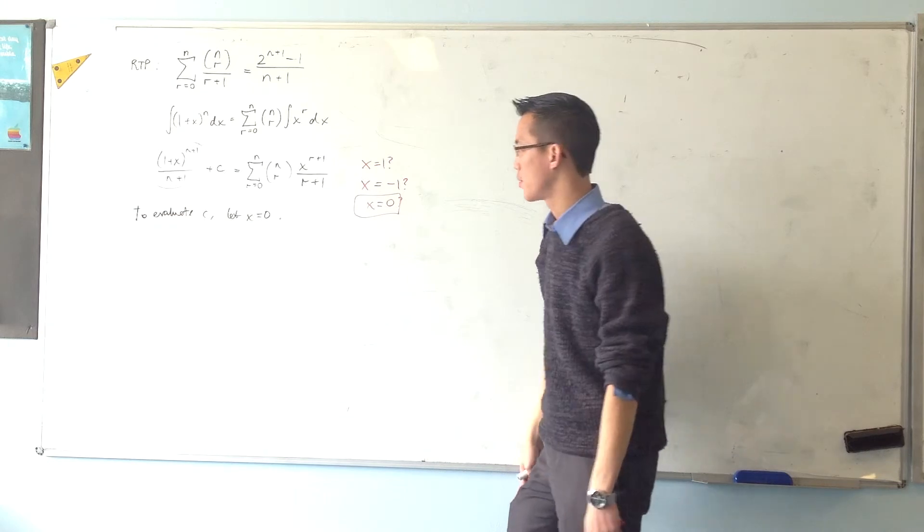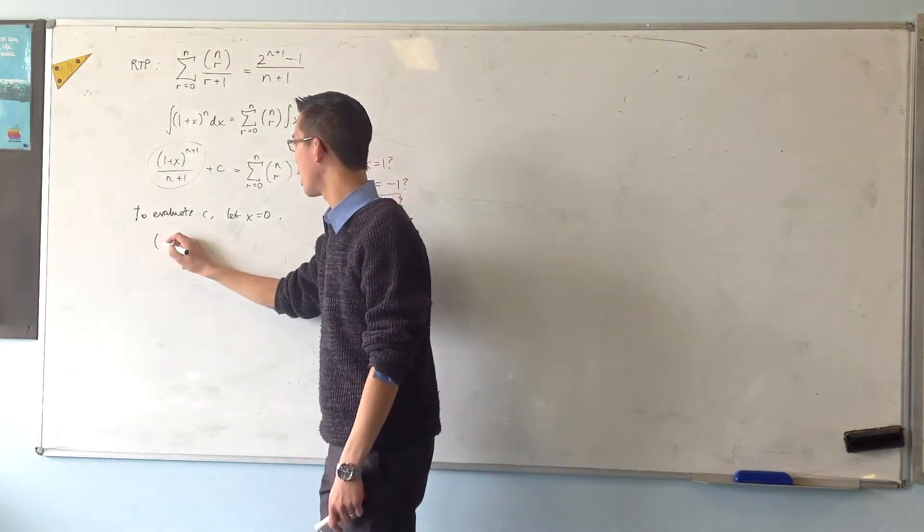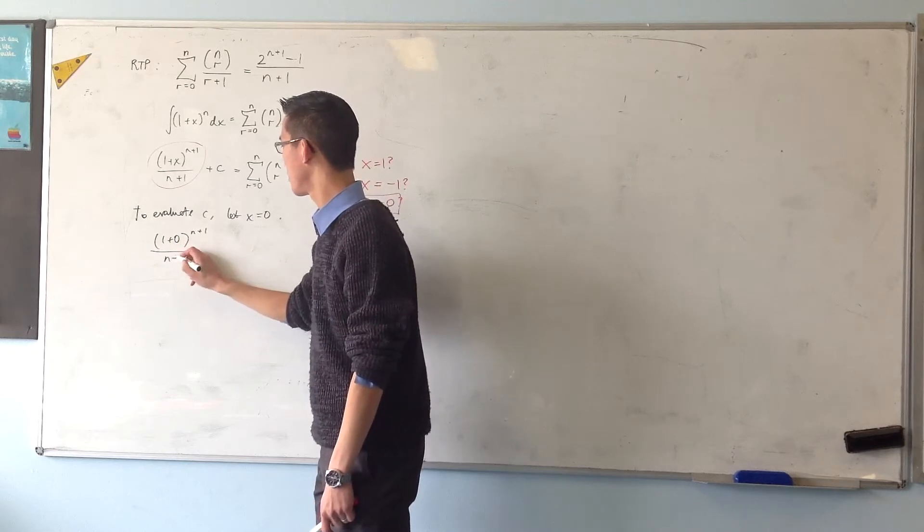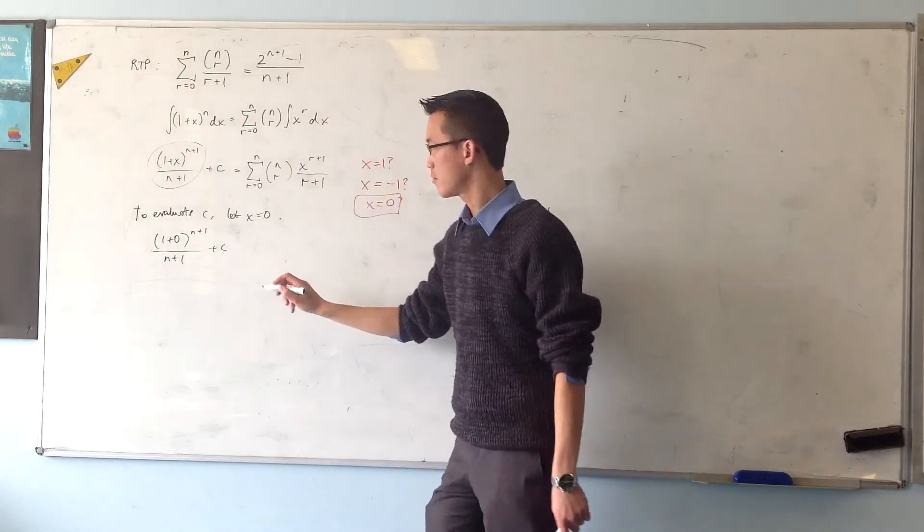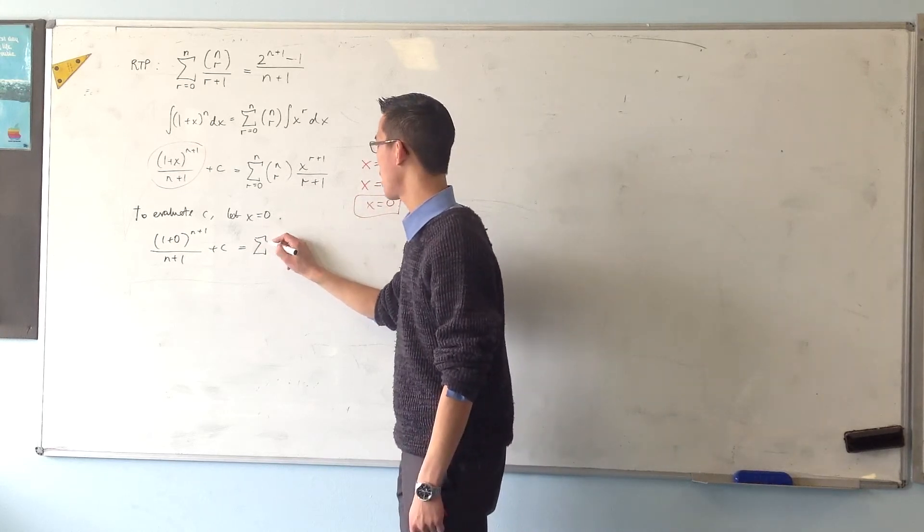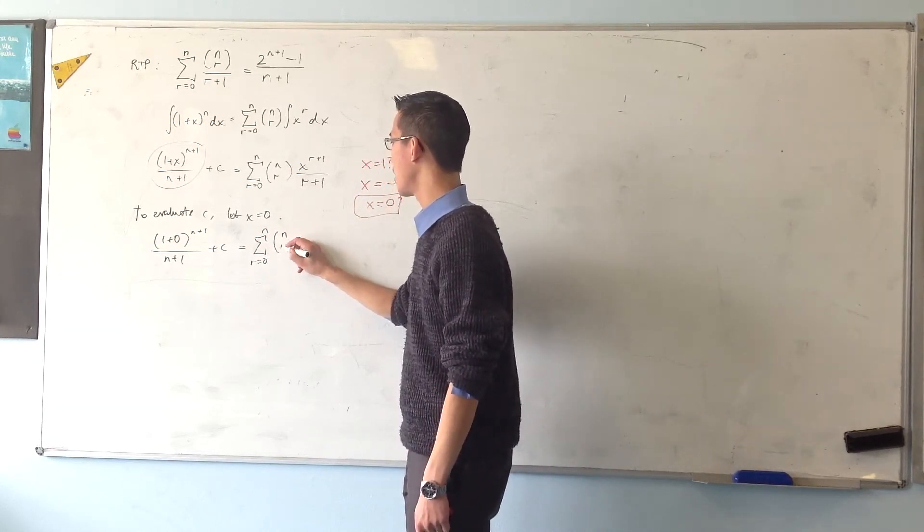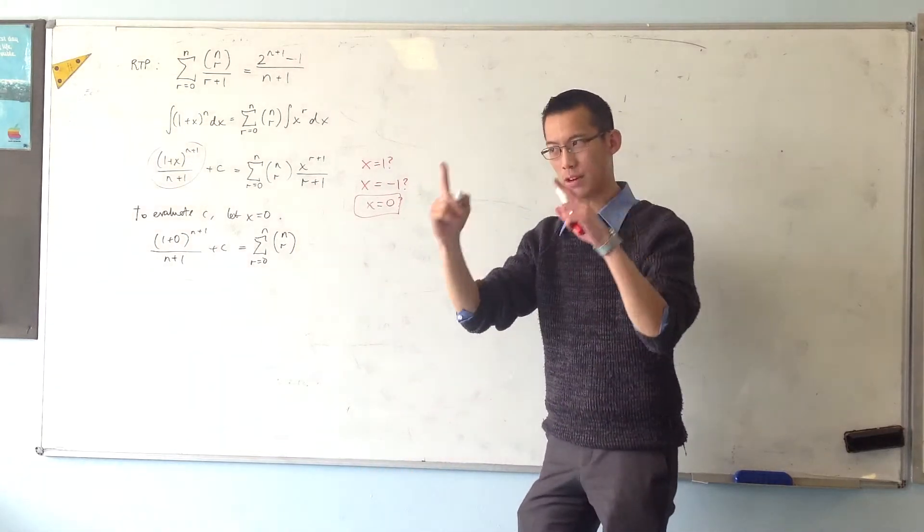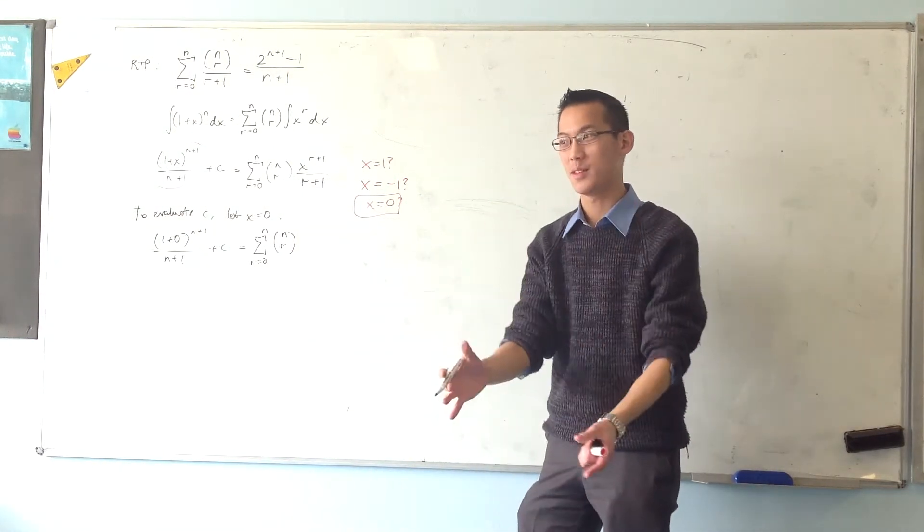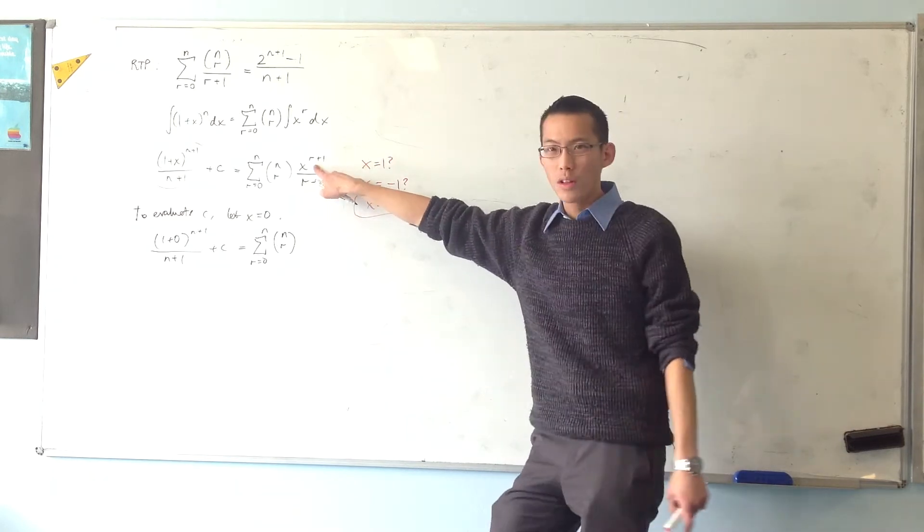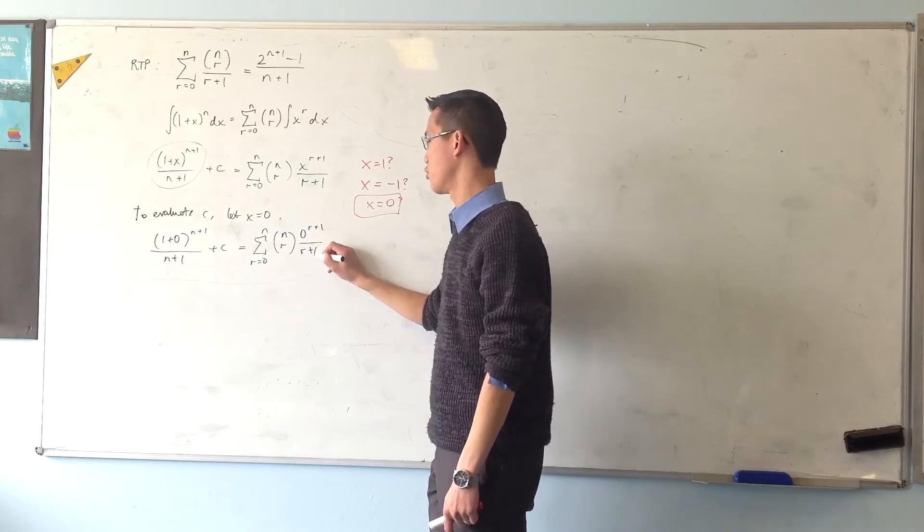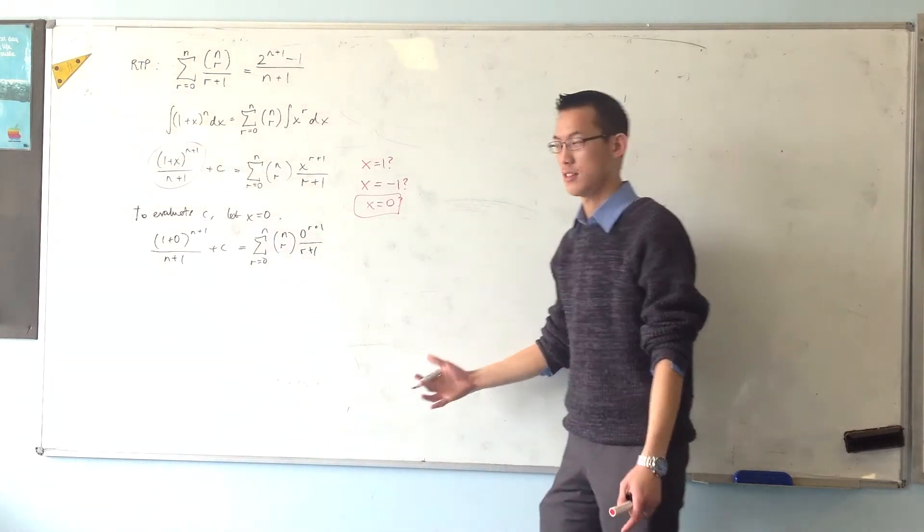So what happens on both sides? I'm going to get 1 plus 0, n plus 1. There's my constant, okay? Now over here, what happens? Well, you've got the sum of a whole bunch of terms, but what are the terms equal to? This is the clue that I was trying to give you yesterday, which obviously wasn't that good a clue. When x equals 0, right, all of these terms will vanish, because 0 to the power of, well, I don't care what it's to the power of, actually, it's just 0.